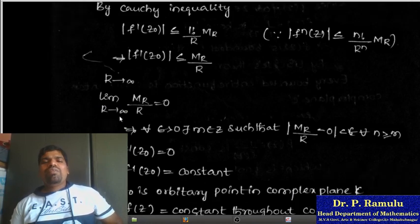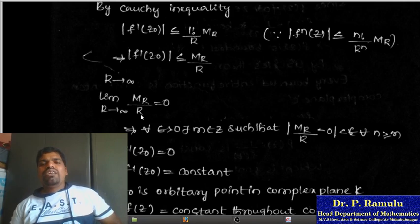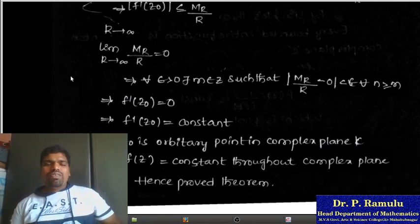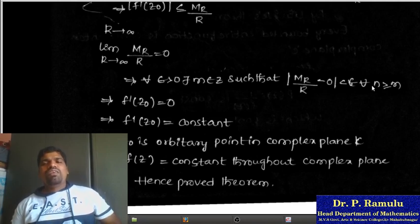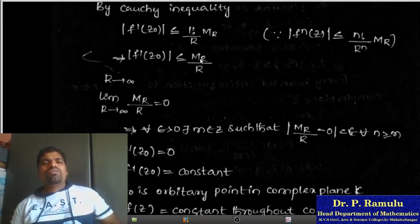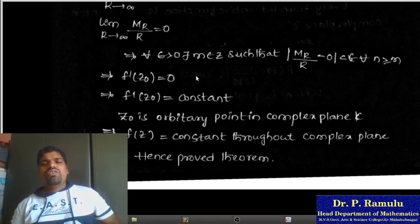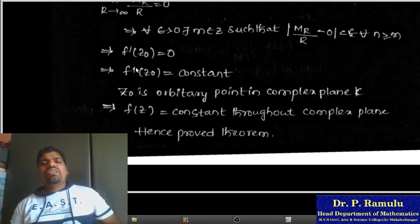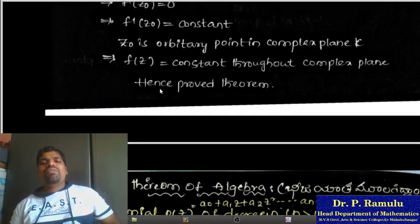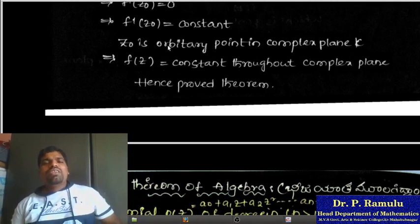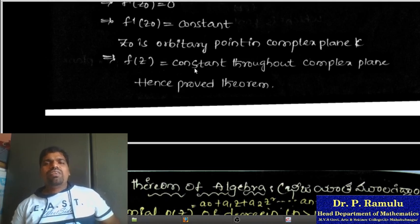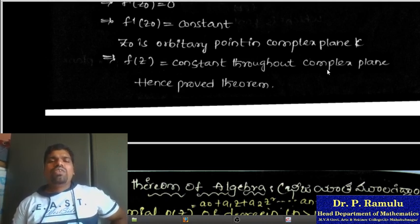As r → ∞, M/r → 0, which implies for all ε > 0 there exists R such that M/r < ε for all r > R. Therefore |f'(z₀)| < ε for any ε > 0, which implies |f'(z₀)| = 0, so f'(z₀) = 0. Since z₀ is any arbitrary point in the complex plane, f'(z) = 0 throughout the complex plane, which implies f(z) is constant. Hence Liouville's theorem is proved.